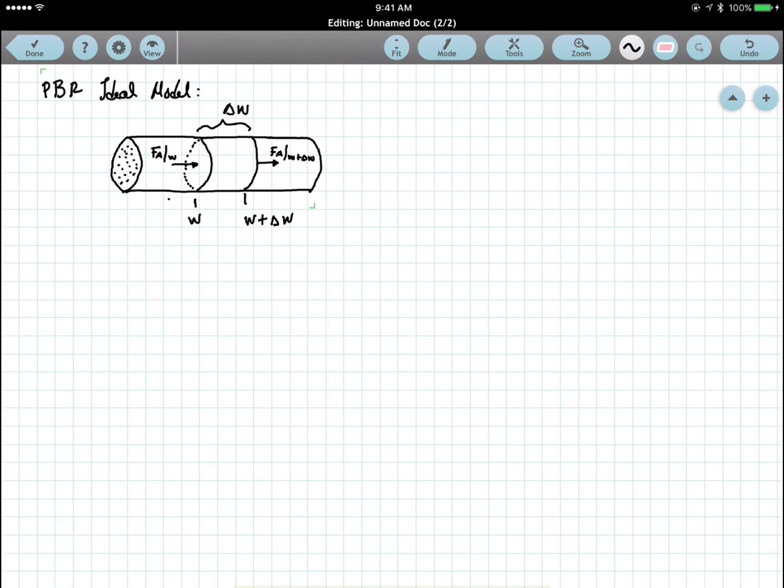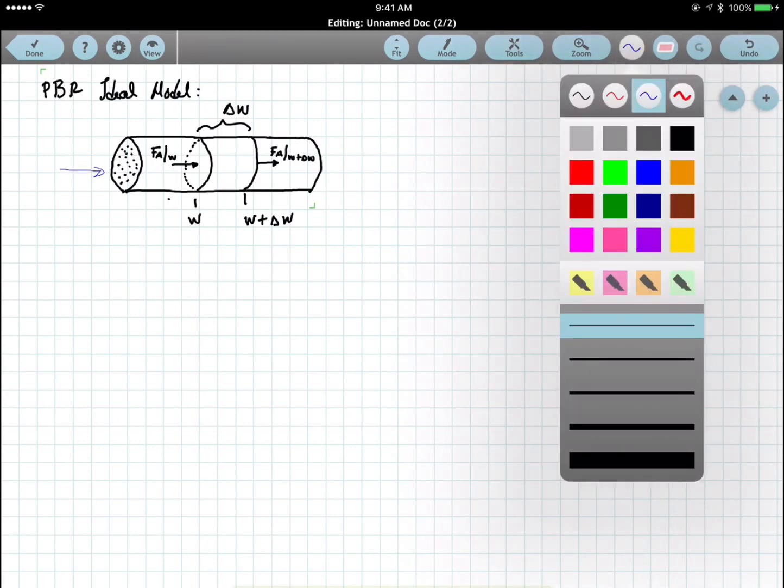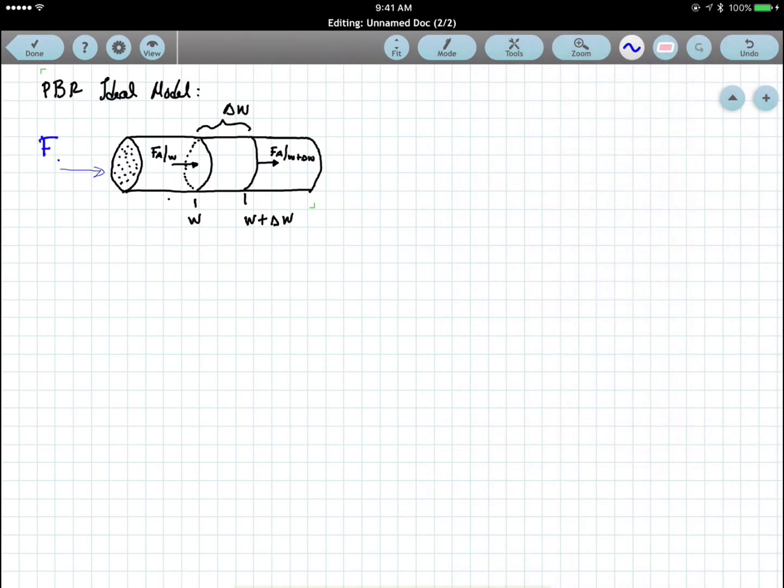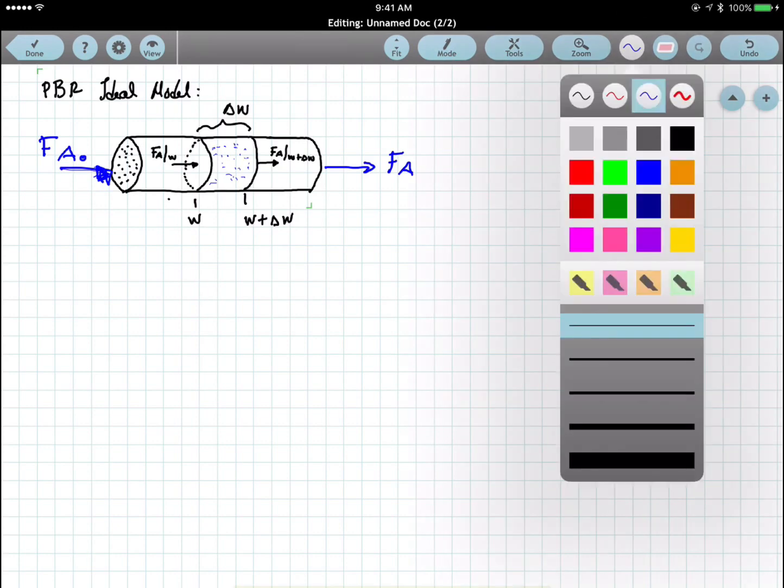We have in this case the flow of reactant A entering the reactor, which is going to be the initial molar flow of reactant A. And then at the end of the reactor, we have whatever is left unreacted of reactant A. So in difference compared to the other model, instead of having a differential element that is in terms of volume, now we're more concerned about the mass of the catalyst that is in this mass differential element.